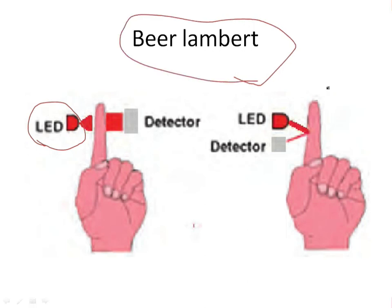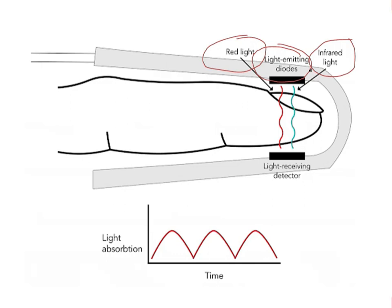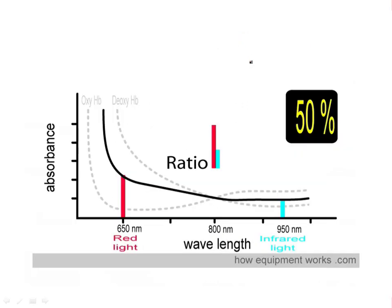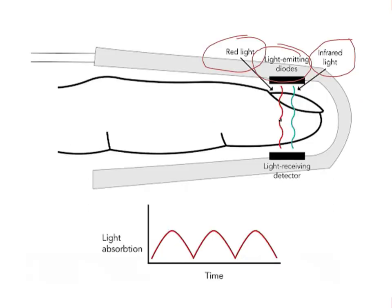According to a physical concept, the Beer-Lambert concept, when the red wavelength and the infrared light walk through the finger, they will be absorbed in different components according to the presence of oxygenated and deoxygenated hemoglobin. The red light will be absorbed by deoxygenated hemoglobin.